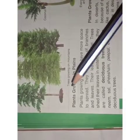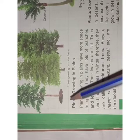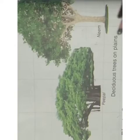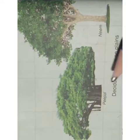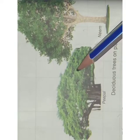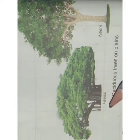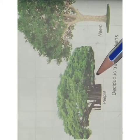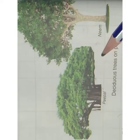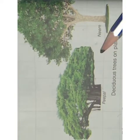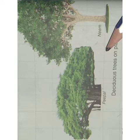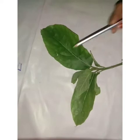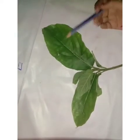Now we come to the next type of terrestrial plants — plants growing in plains. Plants growing in plains have space to spread. They have several branches and leaves. They can survive in a hot climate and may shed their leaves in winter. Trees which shed their leaves in winter are called Deciduous trees.